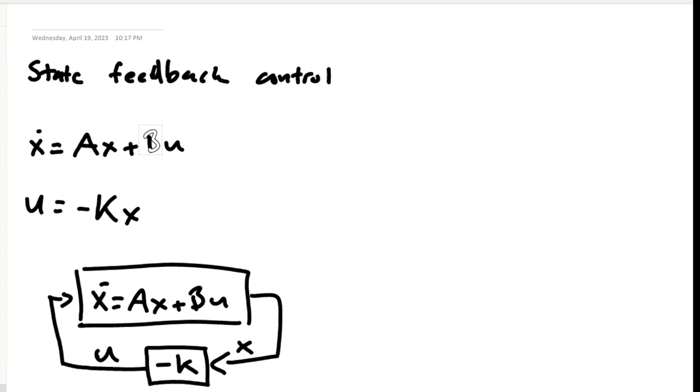We multiply the state of the system by a gain matrix K to get the input to the controller. This gives us a new combined system with dynamics x dot equals A minus BK times x, or as I will use for the majority of this video, x dot equals A bar times x.